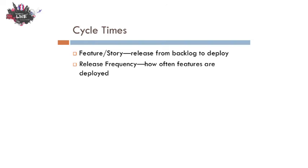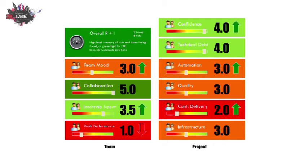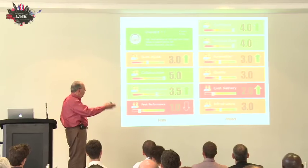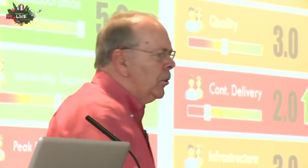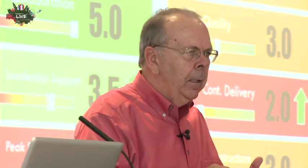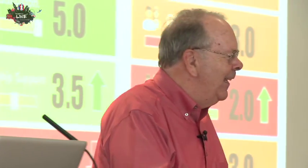I want to talk briefly about some organizational health issues. A colleague, James Brett from Australia, gave me this chart. At a project level, on the left you have organizational health issues around team mode, collaboration, and leadership support. On the right-hand side you have performance issues with a bar showing how you're doing. This is multidimensional, holistic, and encompasses both organizational health and performance. I asked James if I could use it today, and he said yes.